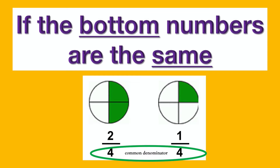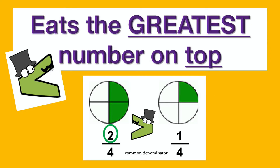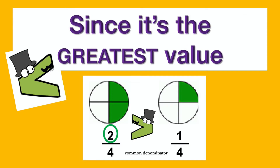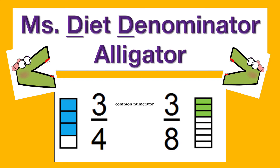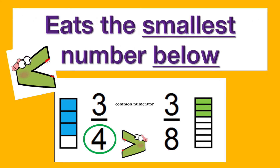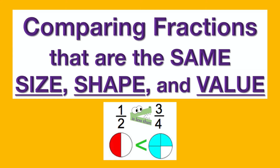It's the greatest number — it's the greatest number on top. Since it's the greatest value, if the top numbers are the same, the smallest number below means it's the greatest value.